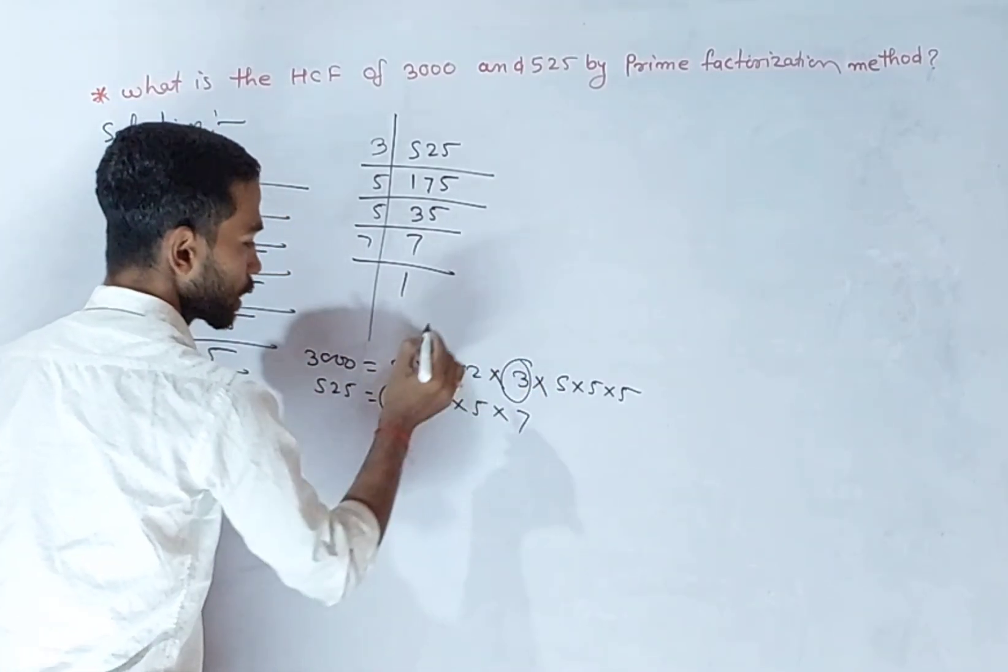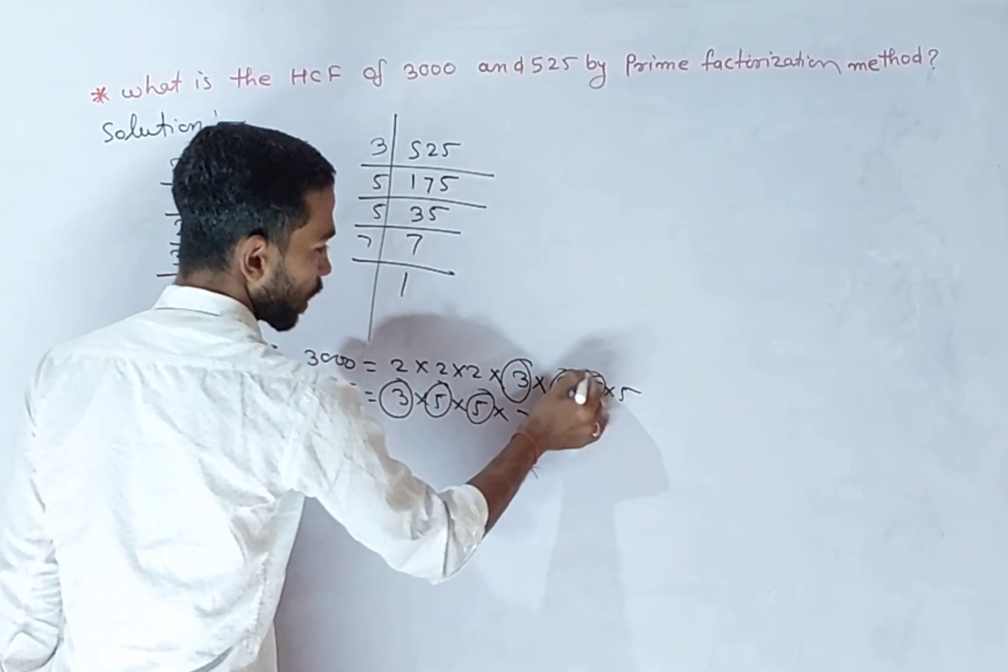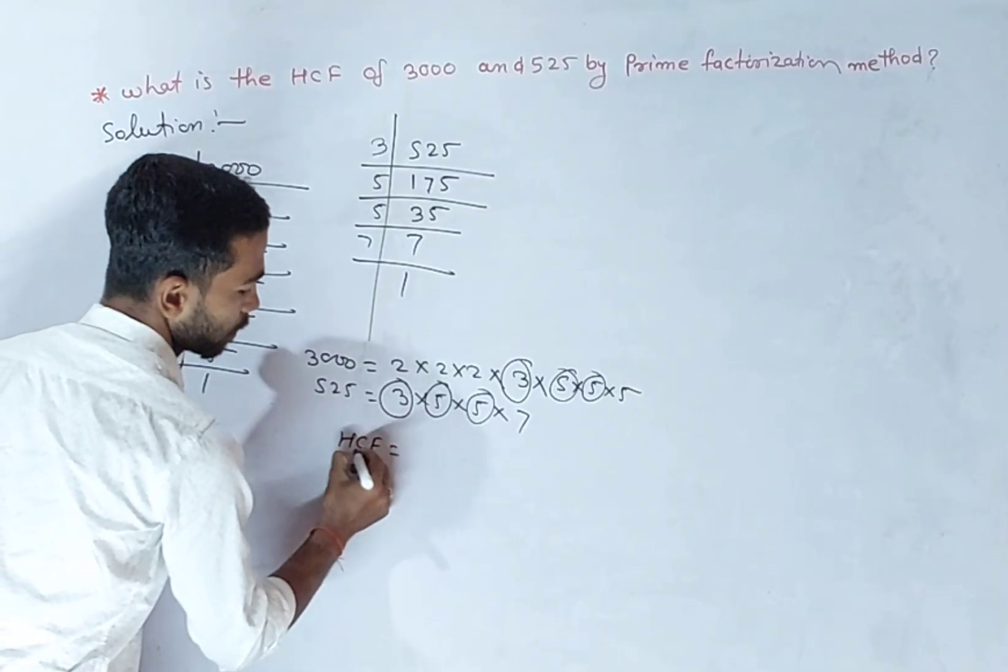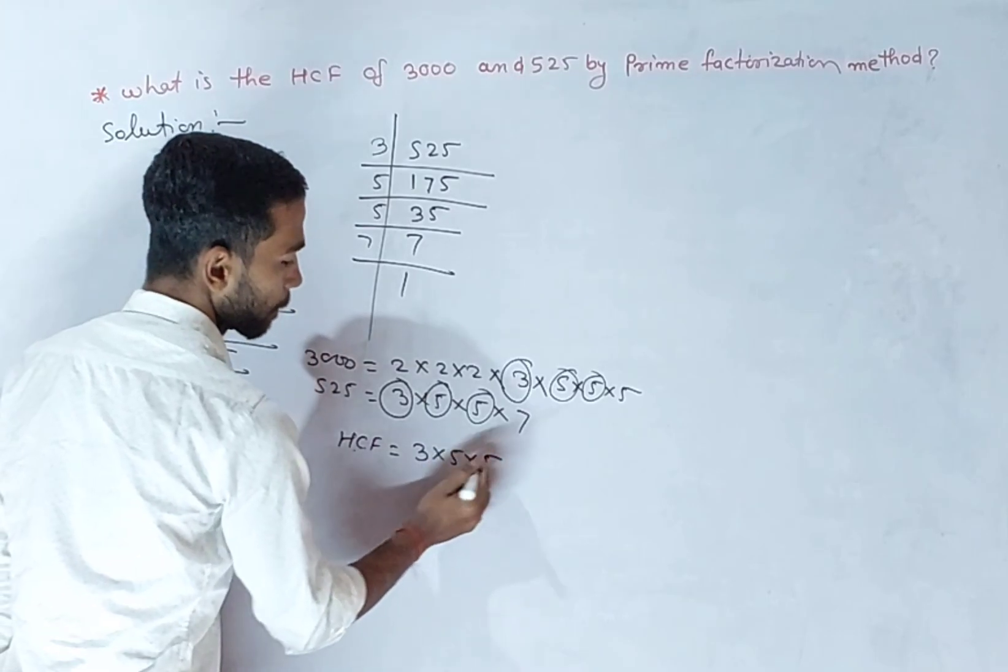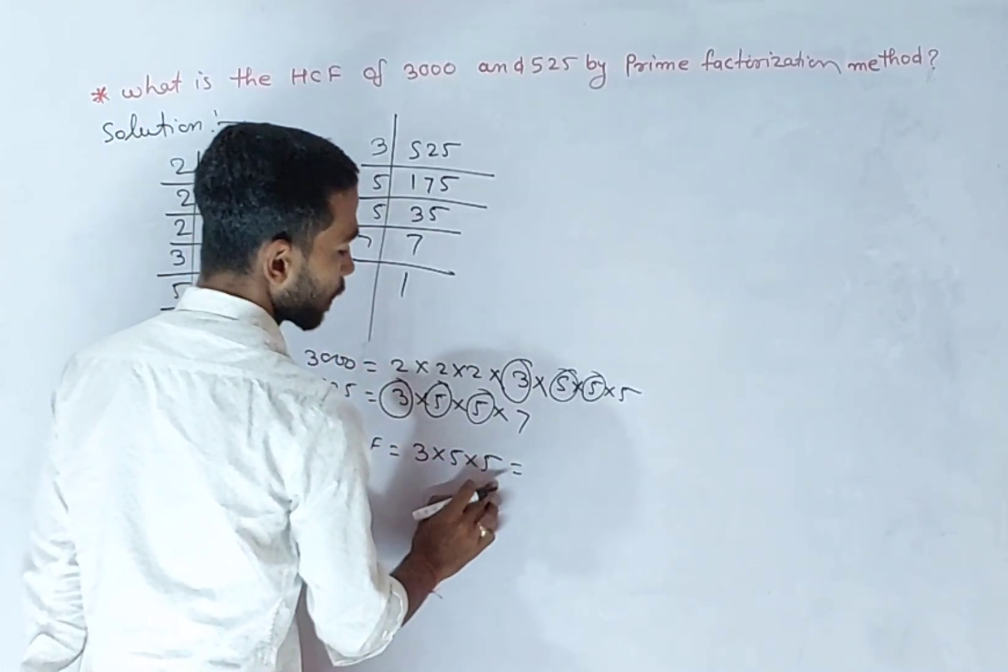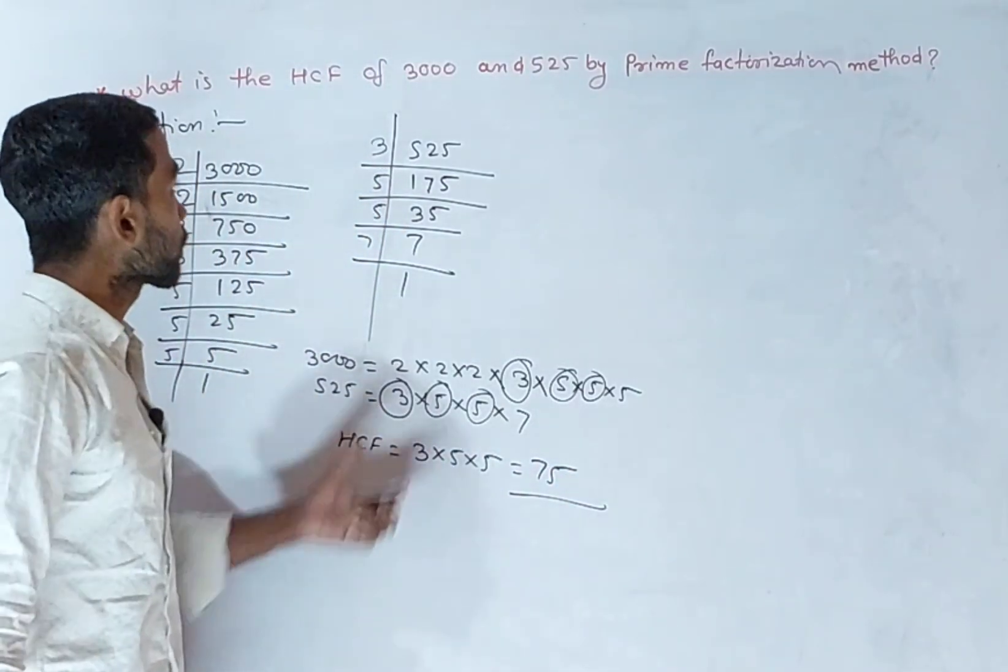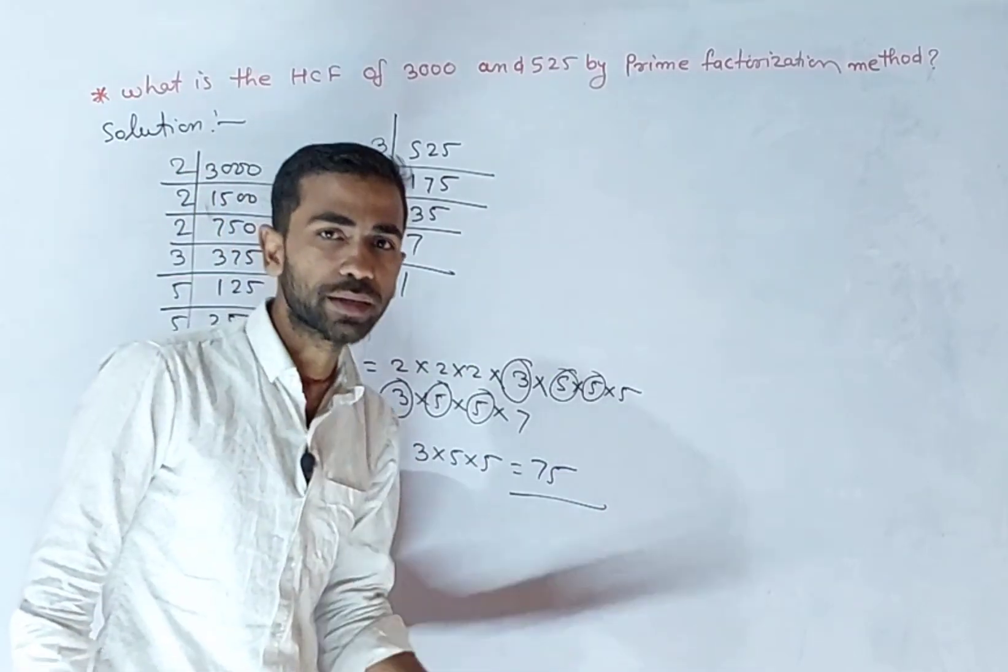Common factors are 3, 5, 5. So HCF is 3 × 5 × 5. 3 times 5 is 15, times 5 is 75. HCF of 3000 and 525 is 75. Thank you.